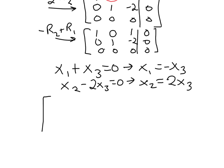And so the solution set, x1, x2, x3, looks like this. x1 is equal to negative x3. x2 is equal to 2x3. And then x3 is the free variable. It can be whatever it wants.